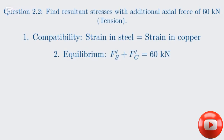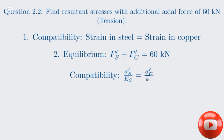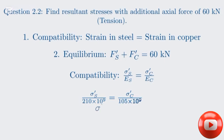We'll again use our two key principles. The principle of compatibility tells us that the strain in the steel equals the strain in the copper. Since stress equals E times strain, strain equals stress divided by E. So sigma_S' divided by E_S equals sigma_C' divided by E_C. Plugging in the moduli: sigma_S' over 210 times 10 to the 9th equals sigma_C' over 105 times 10 to the 9th. This simplifies to sigma_S' equals 2 times sigma_C'. This is our compatibility equation.